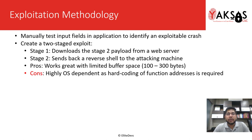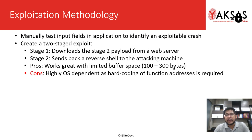This is the brief overview of our exploitation methodology. We will first start with manually testing input fields in the application to identify an exploitable crash. We will then create a POC and further develop our exploit. Our final exploit will be a two-staged exploit. The first stage will download the stage 2 payload from a web server using the system function of the Win32 API. The second stage sends back a reverse shell to the attacking machine after executing the downloaded payload using MSI exec.